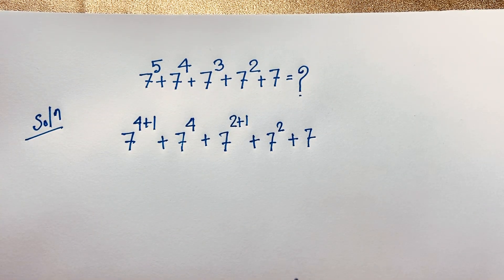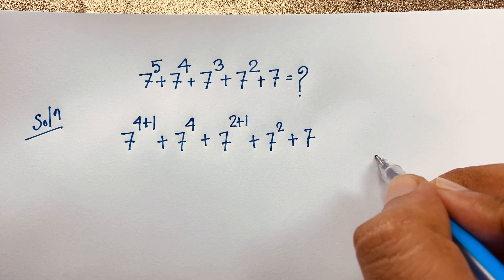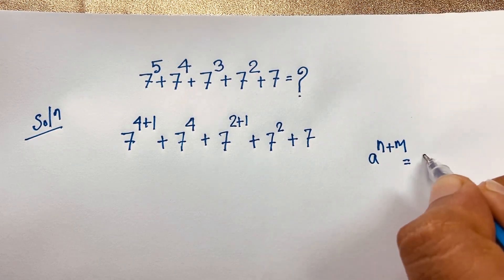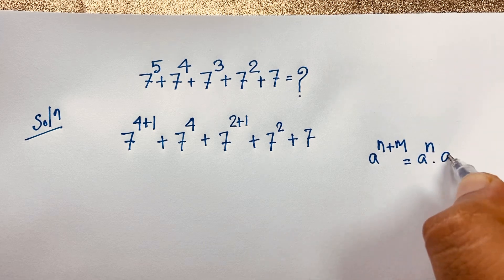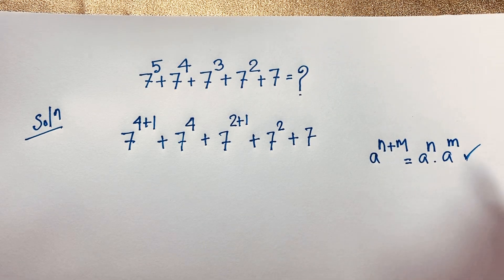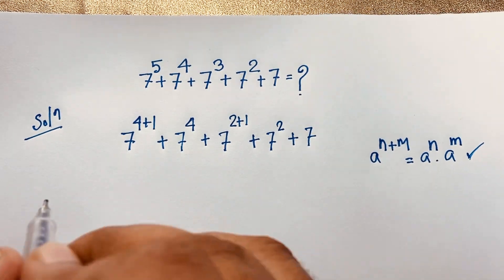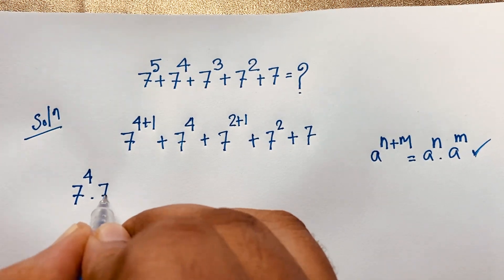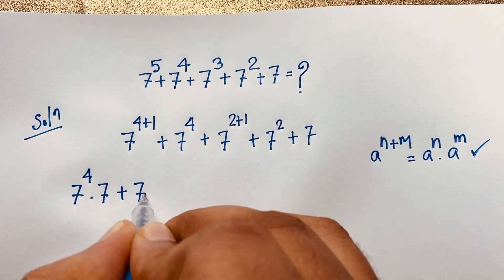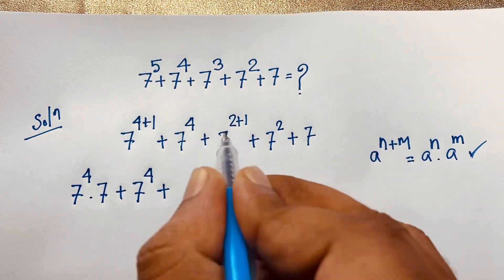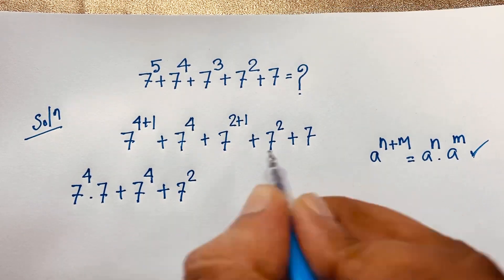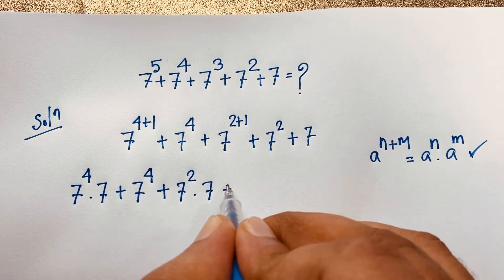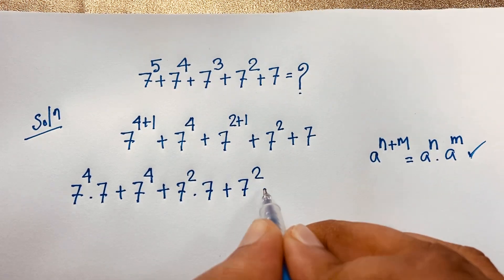Now at this moment, according to the exponential formula, we know that a to the power n plus m it will be a to the power n times a to the power m. According to this formula I can say this expression will be 7 to the power 4 times 7 to the power 1, plus 7 to the power 4. Then here I apply this formula again: it will be 7 to the power 2 plus 7.